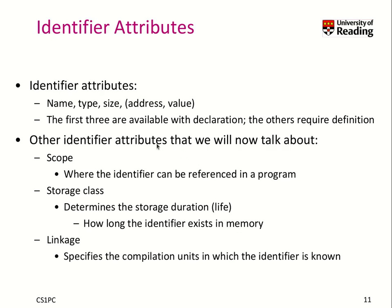Let's talk a bit more about identifiers and the attributes we store with them. We need the name of the identifier naturally, the data type — like integer — the size, typically four bytes if it's an integer, the address in memory, and the specific value if it has been assigned. For instance, if it's a constant, then you get the value immediately.